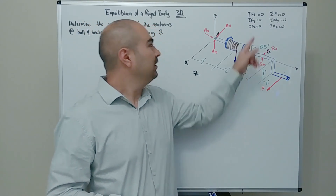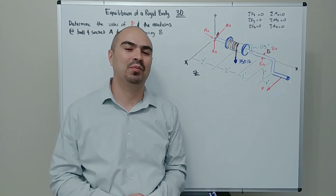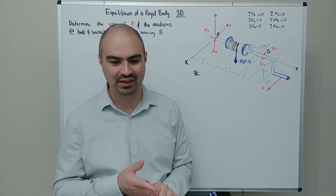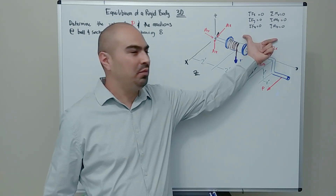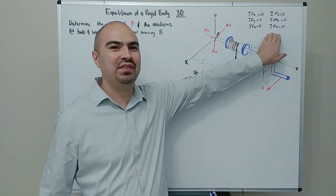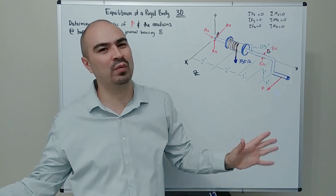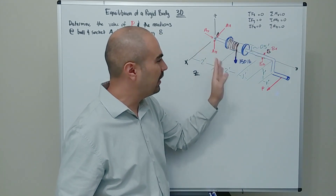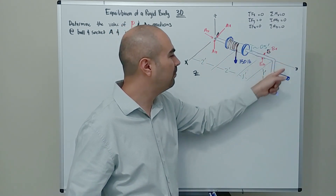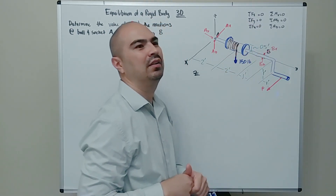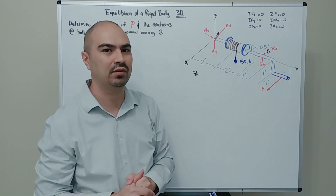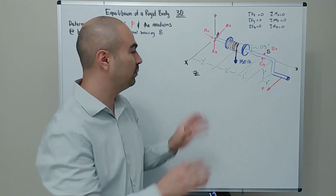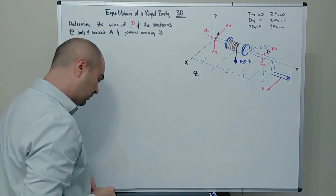We have 6 unknowns and 6 equations of equilibrium: sum of forces in X, Y, and Z, plus three moment equations. I advise starting with the moments — it's harder, but once through that hurdle the sum of forces is easy. Before summing moments, make sure you don't have forces at an angle; you want the X, Y, and Z components of all forces already in Cartesian vector form.